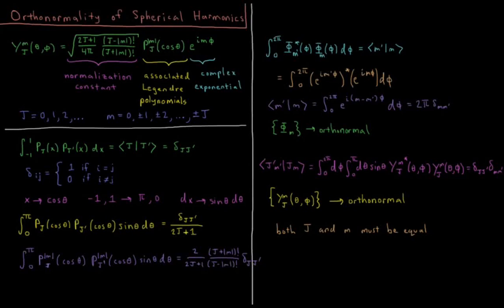In this video, we're going to show that the wave functions of the rigid rotor model, the spherical harmonics, are orthonormal to one another. The wave functions of the rigid rotor are the spherical harmonic functions, Y_jm of theta and phi. j and m are quantum numbers. j starts at 0 and goes up to infinity as an integer. m is allowed to take on all values from negative j up to positive j.